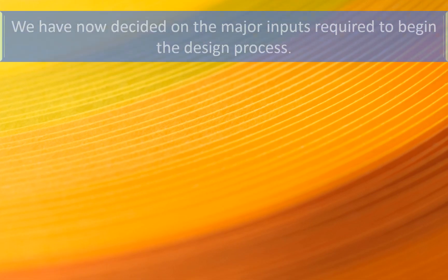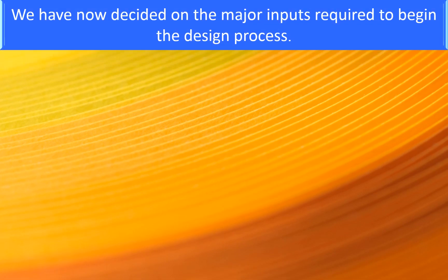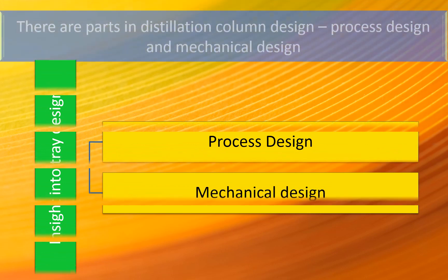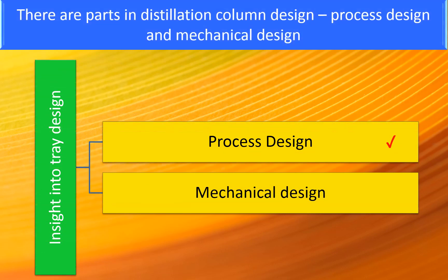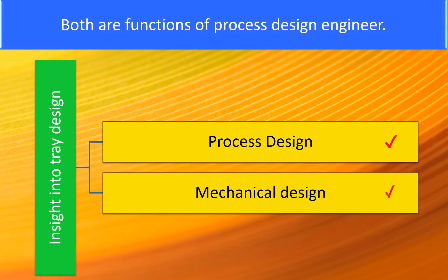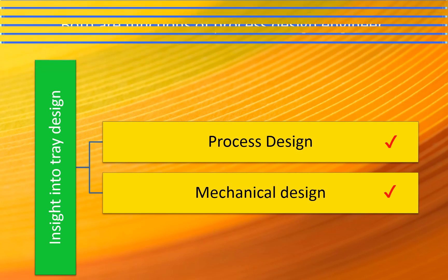We have now decided on the major inputs required to begin the design process. There are two parts of the distillation column design: process design and mechanical design. Both are functions of the process design engineer.